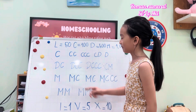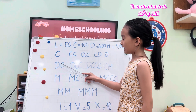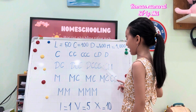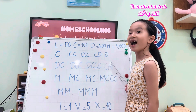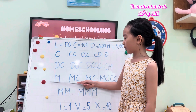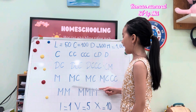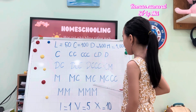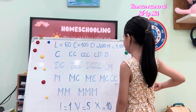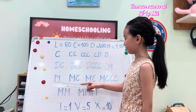Count with me: 600, 700, 800, 900. So what would MC, MCC, and MCCC mean?